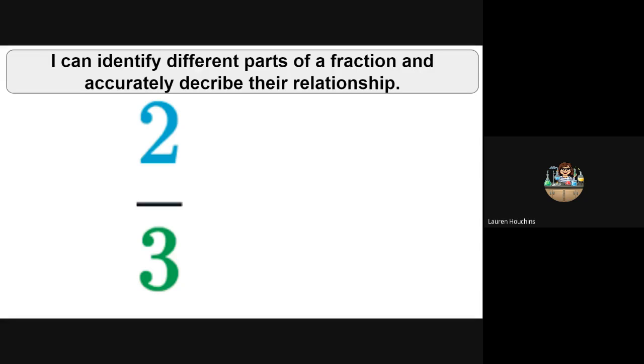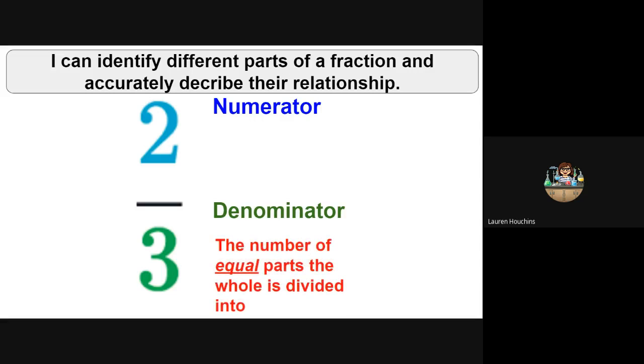So we have a fraction here. We have two thirds. That top number is our numerator. Bottom number is our denominator. Denominator tells us the number of equal parts that the whole is divided into.